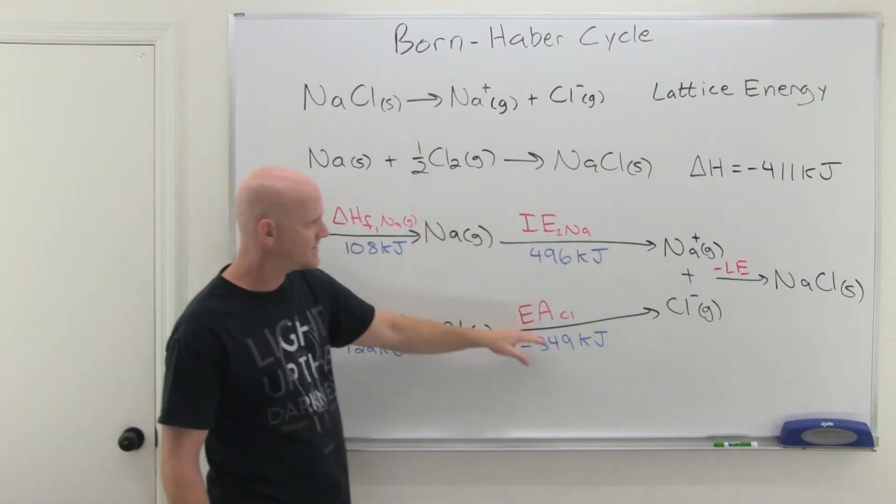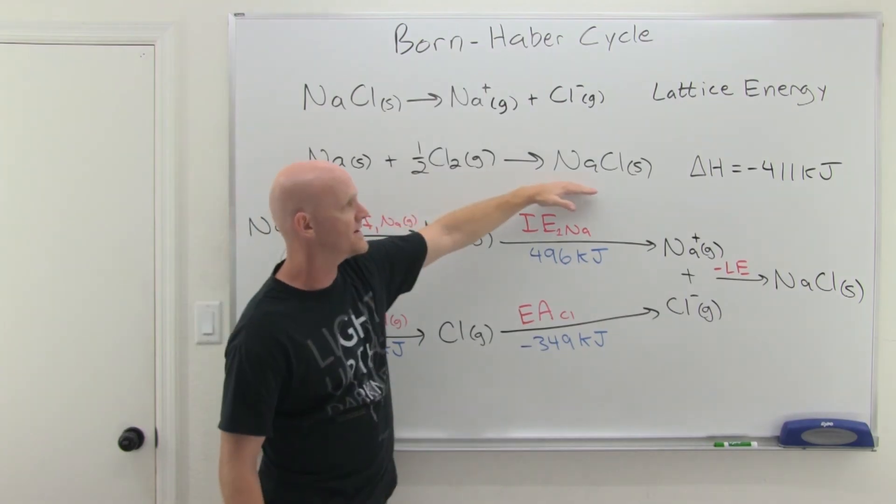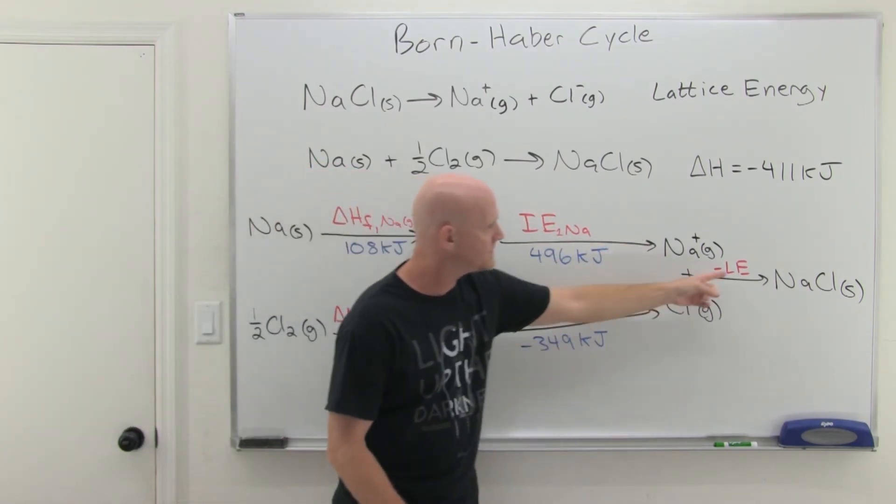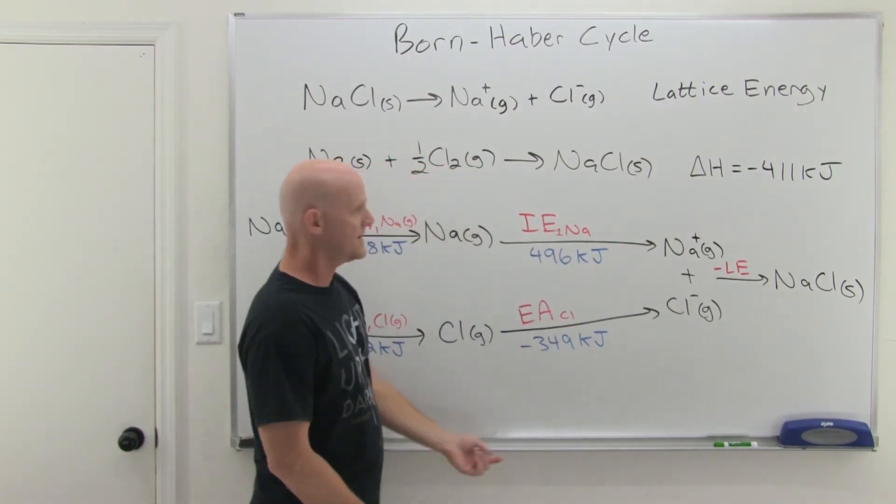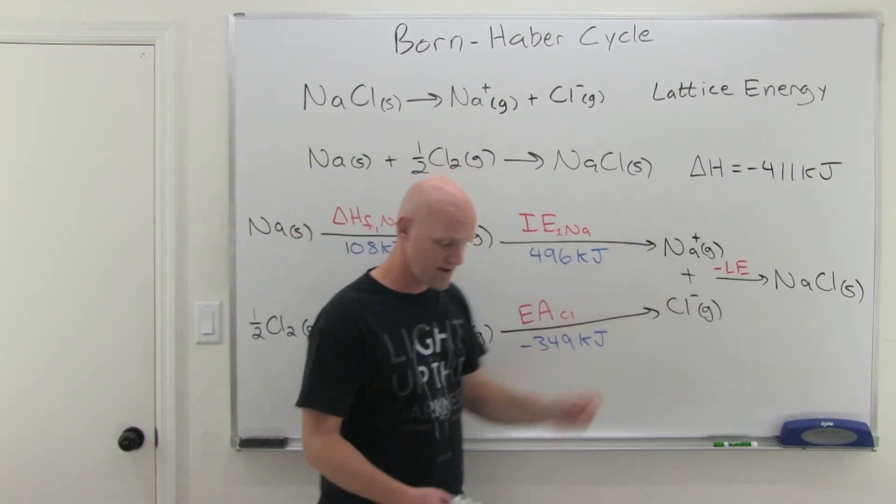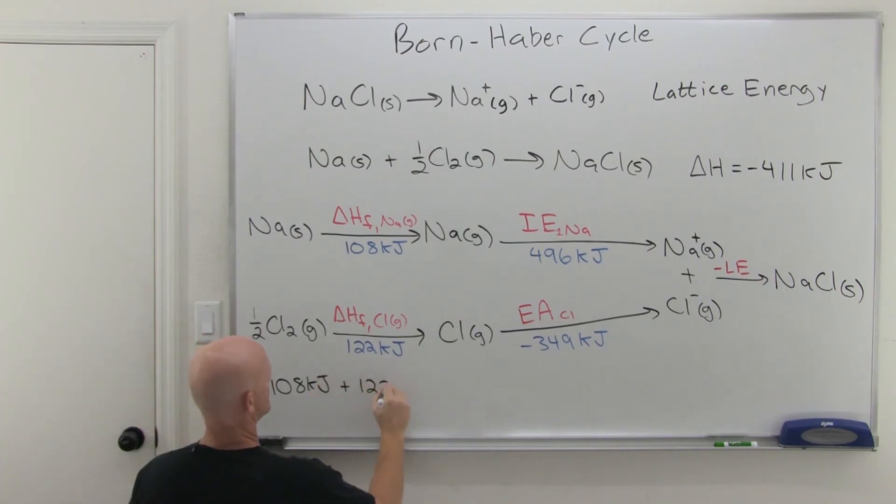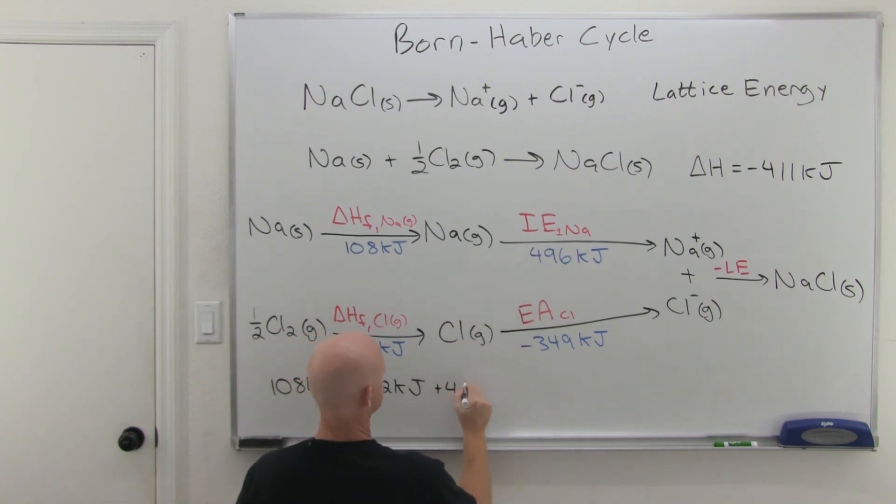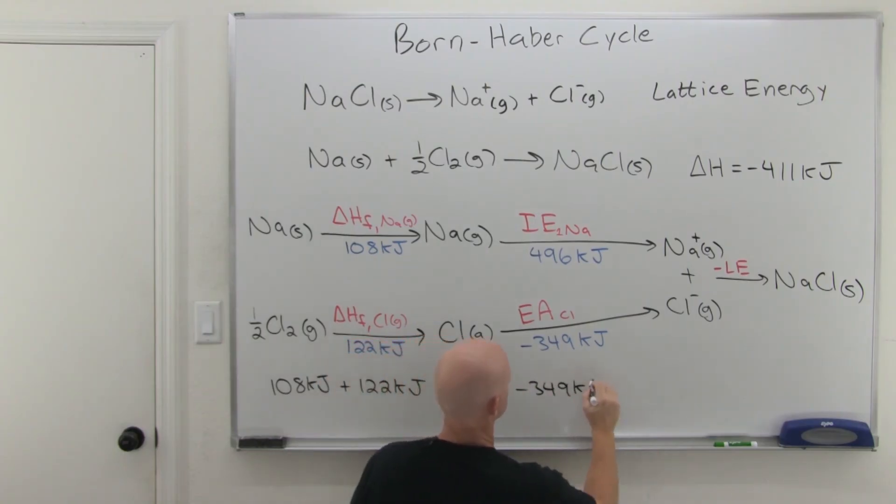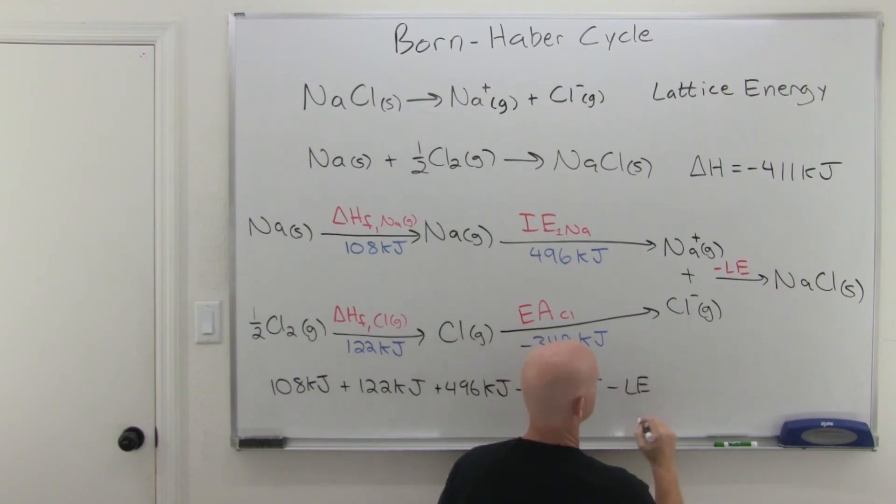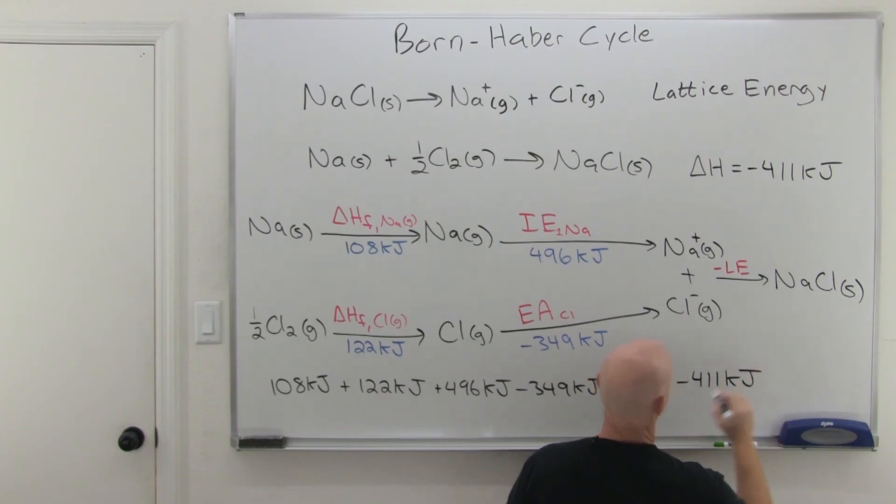So all five of these steps add up to this reaction right here. And so all five of these individual values are going to add up to negative 411 kilojoules. And the only one we don't know is that minus lattice energy. So that's the basis of our calculation here. In this case, we're going to have 108 kilojoules plus 122 kilojoules plus 496 kilojoules minus 349 kilojoules minus the lattice energy, which could just make that minus X. And this equals a grand total of negative 411 kilojoules.